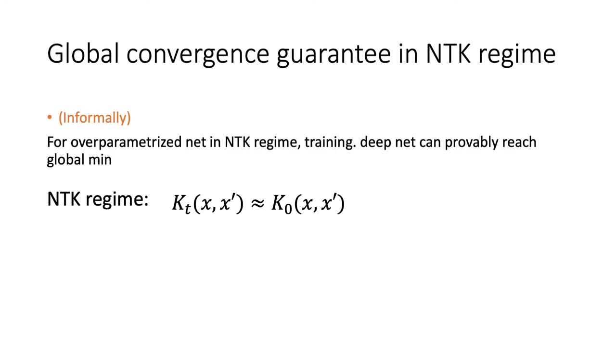With a so-called neural tangent kernel regime of training neural net, we can have a highly overparameterized net and use very small step size. In this case, the deep net can probably converge to global optimum.